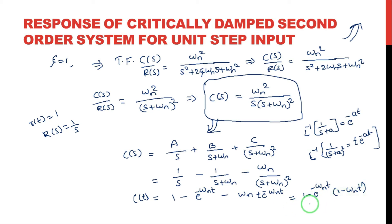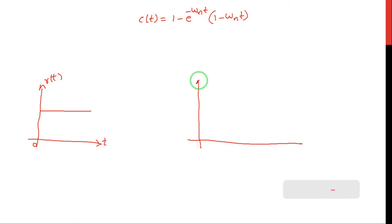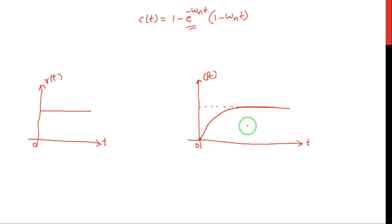This is the final expression for c(t) — the output response when a step input is applied to a critically damped system. Looking at the graph of the step response with c(t) versus t, similar to a first order system, the waveform is exponential in shape, starting from 0 and slowly increasing until it reaches the steady state value. This is the response of the second order critically damped system. Thank you for watching, see you in the next class.